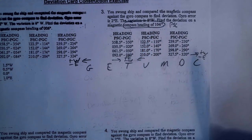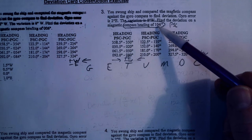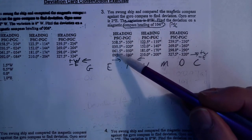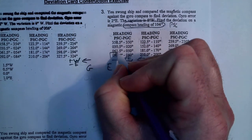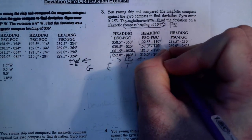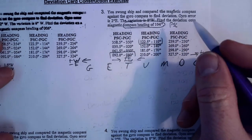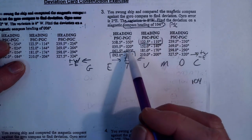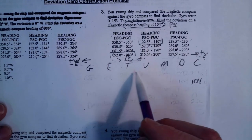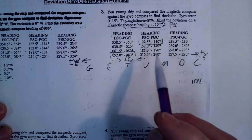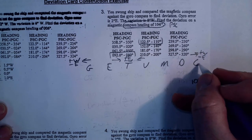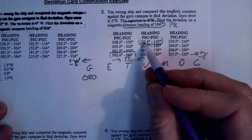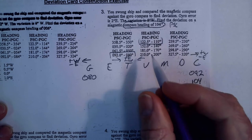Now I need to find the brackets surrounding 104. Since 104 is a compass heading, I look in the PSC column. Sliding down — 92, then 104 is passed at 122.5 — so I choose the pair above and the pair below to bracket 104. I'll write 104 here, the first pair at the top, the second pair at the bottom: PSC 092 with gyro 080, and PSC 122.5 with gyro 110.